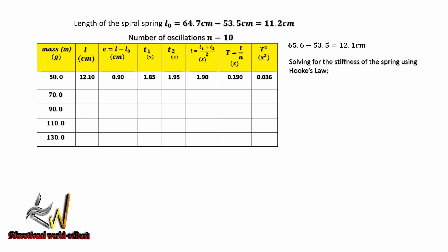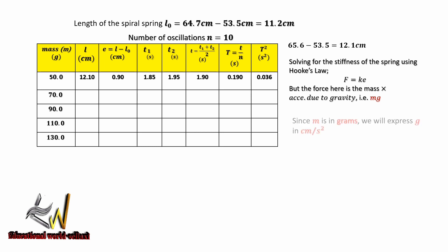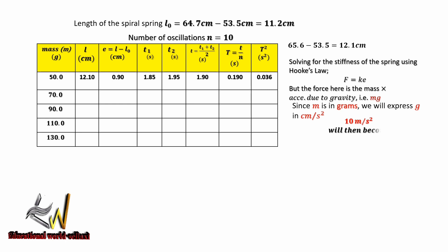Now I'll solve for the stiffness of the spring using Hooke's Law: F = ke, where force is mass times acceleration due to gravity (mg). The mass is in grams and we express acceleration due to gravity in centimeters per second squared — so 10 m/s² becomes 1000 cm/s². This is the unit convention we'll use throughout this experiment.